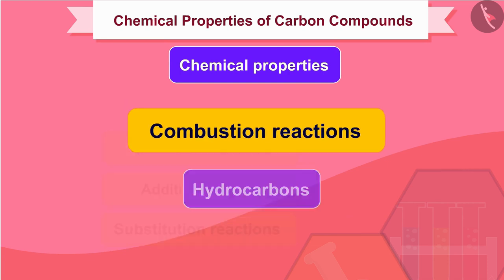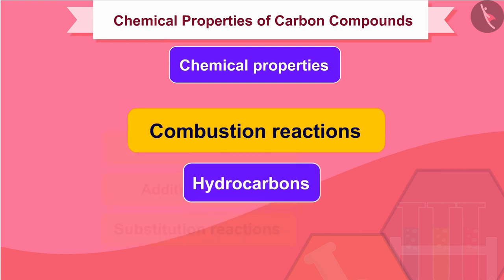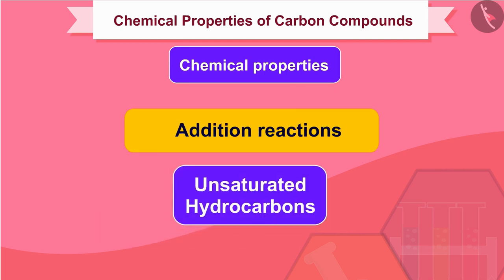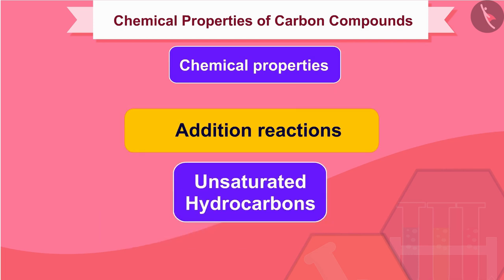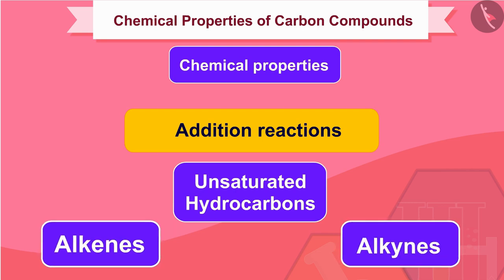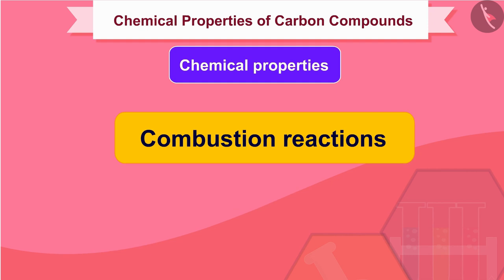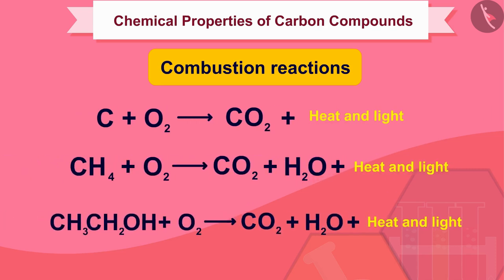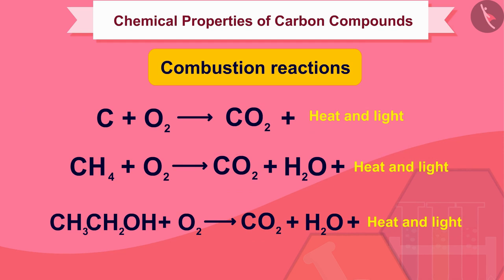Combustion reactions occur in all types of hydrocarbons. Substitution occurs only in saturated hydrocarbons, whereas addition reactions are given only by unsaturated hydrocarbons — alkenes and alkynes. Carbon in all its allotropic forms burns in oxygen to give carbon dioxide, along with the release of heat and light. Most carbon compounds also release a large amount of heat and light on burning.